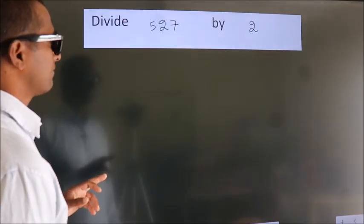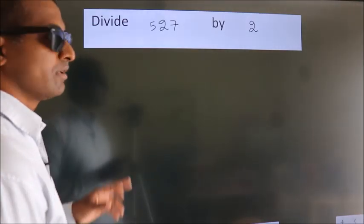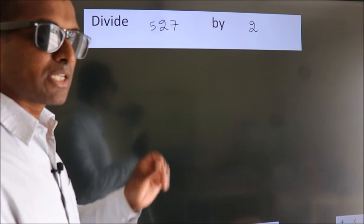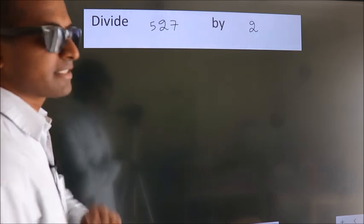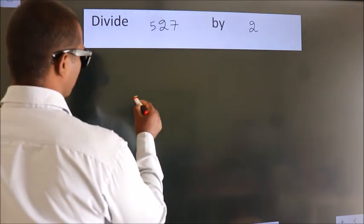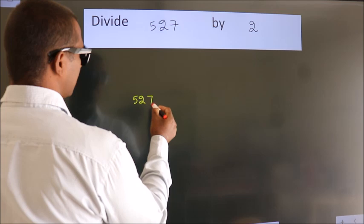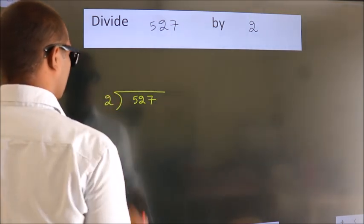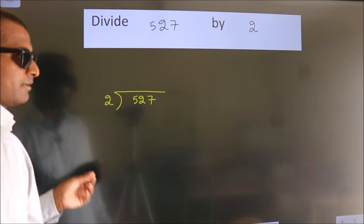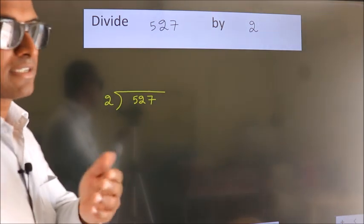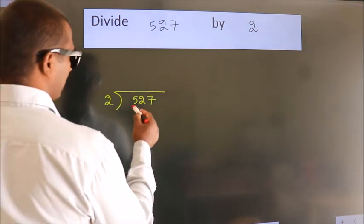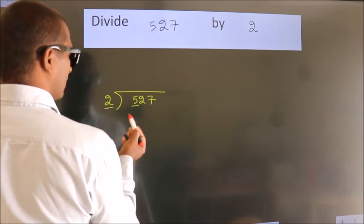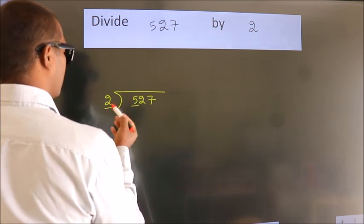Divide 527 by 2. To do this division, we should frame it in this way: 527 here, 2 here. This is your step 1. Next, here we have 5, here 2. A number close to 5 in 2 table is...